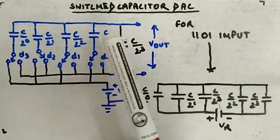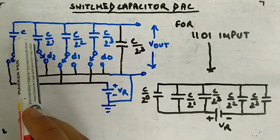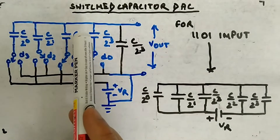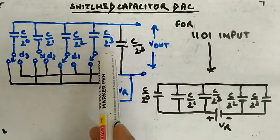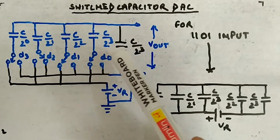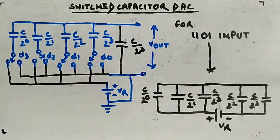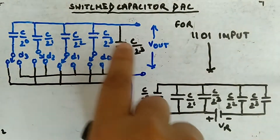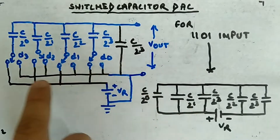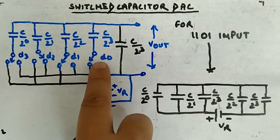Here you can see a circuit. I am taking it for 4 bits. You can see the weights: C divided by 2 to the power 0, C divided by 2 to the power 1, C divided by 2 to the power 2, C divided by 2 to the power 3. This guy in black is an intentionally kept extra capacitor equal to the LSB capacitor. This guy is MSB, this guy is LSB. You can see D3, D2, D1, D0.